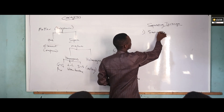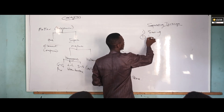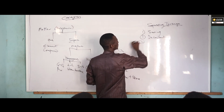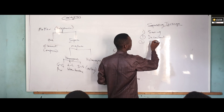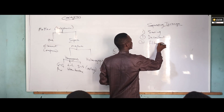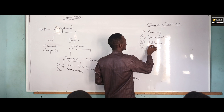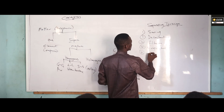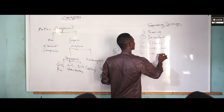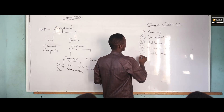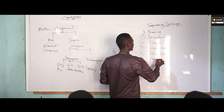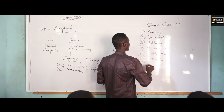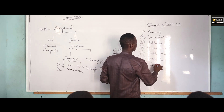The physical content of that mixture is very important. The separating techniques we have are: number one, sieving; number two, decantation; number three, filtration; number four, evaporation; number five, sublimation; number six, distillation; number seven, crystallization.